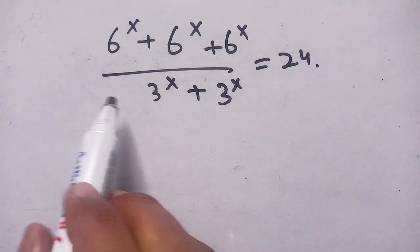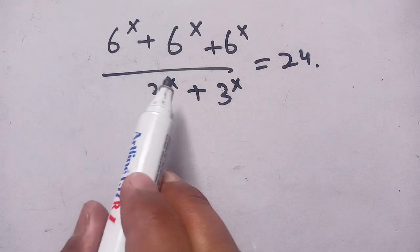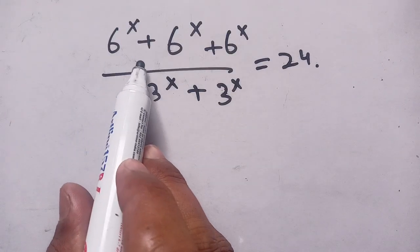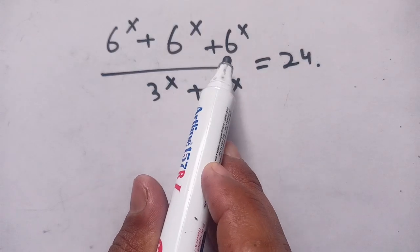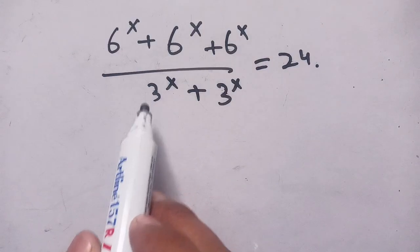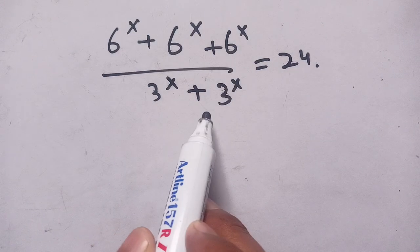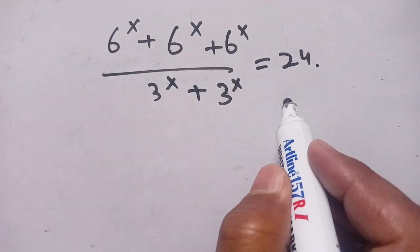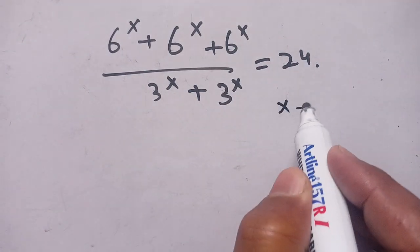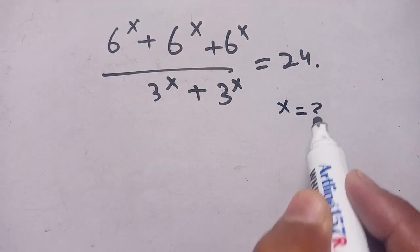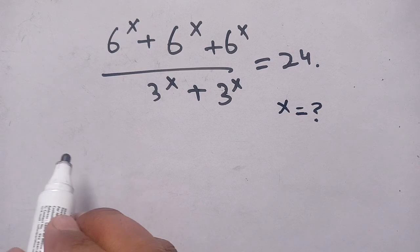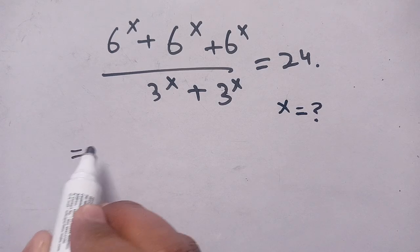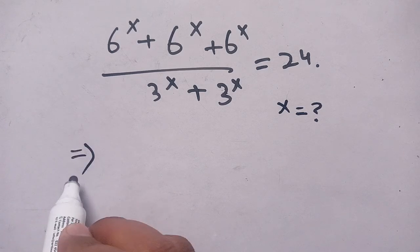Hello everyone. In today's video we are going to solve this exponential equation: 6^x + 6^x + 6^x over 3^x + 3^x is equal to 24, and we have to find the value of x which satisfies this equation.